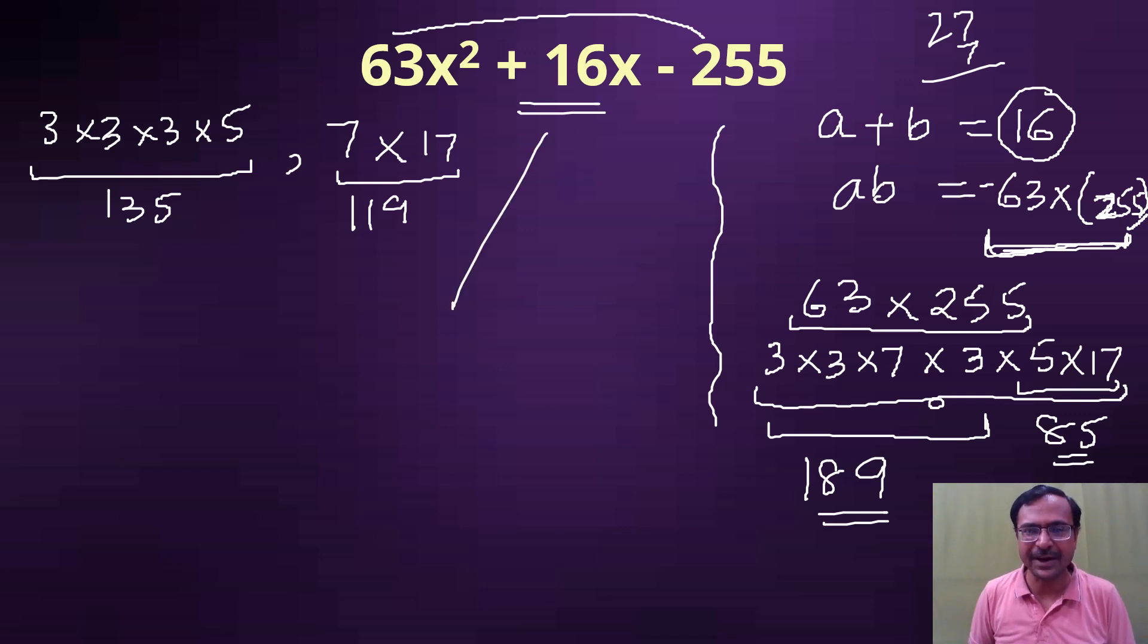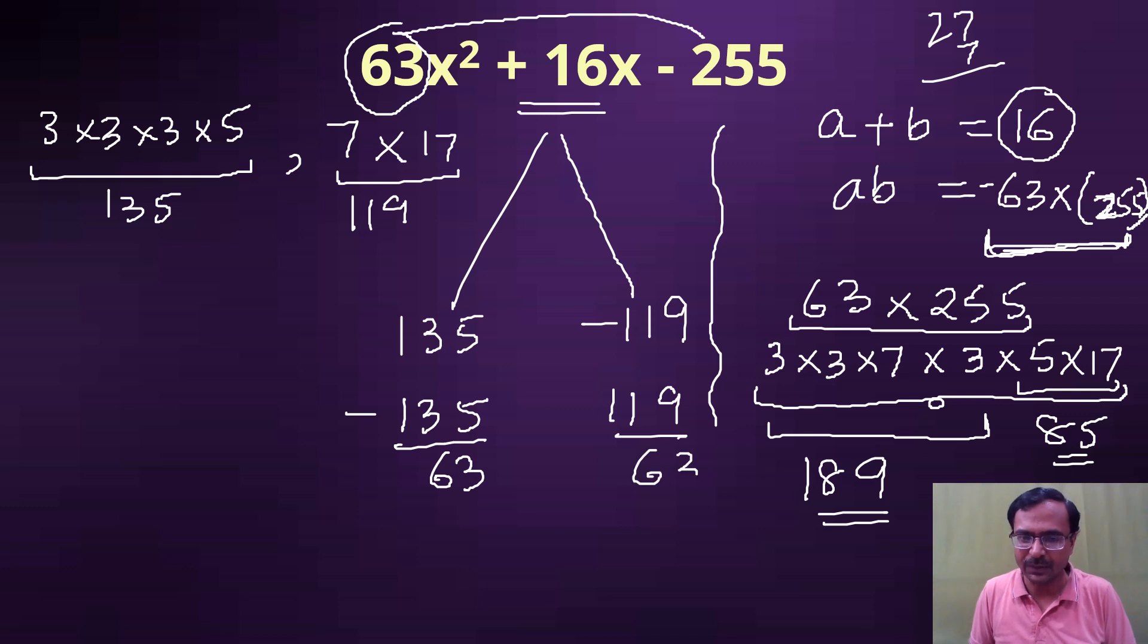So the middle term split factors for this number are 135 and minus 119, because that's what is going to give me plus 16 as the sum. Splitting done. Now change the sign: minus 135 and 119, as I told you in the previous video. And now divide by the coefficient of x², that is 63, so you will have your final answer for this particular question.